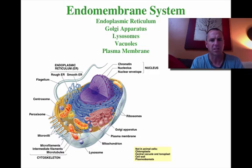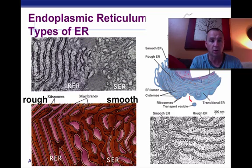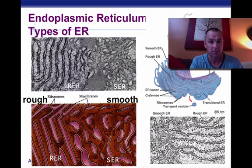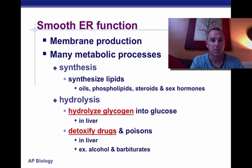The endoplasmic reticulum — I've already mentioned it when I talked about ribosomes. When we talk about the endoplasmic reticulum, there are basically two types: smooth and rough ER. Rough ER are the ones that have ribosomes already attached to them, and smooth ER are the ones that do not have any ribosomes. They both have different jobs, which we'll go into in just a second.